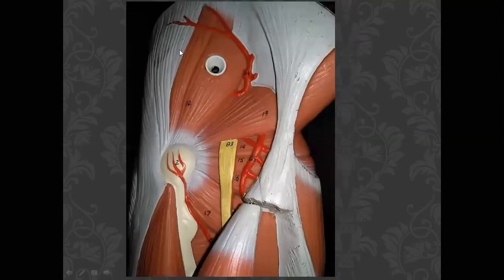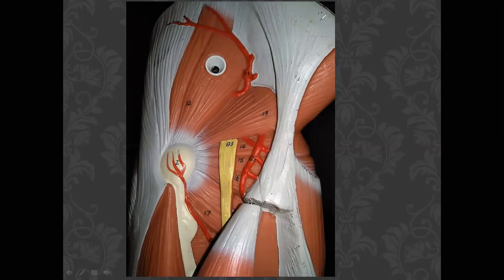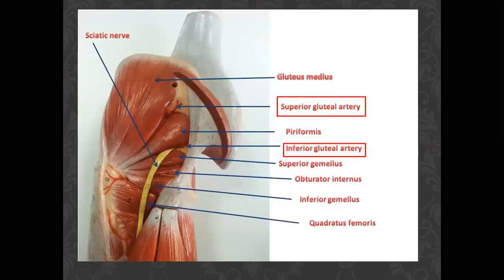In the gluteal region, the piriformis muscle divides the area into two parts. The artery above the piriformis is the superior gluteal artery, and the artery below is the inferior gluteal artery. There are two gluteal arteries: one superior and one inferior, on either side of the piriformis muscle.